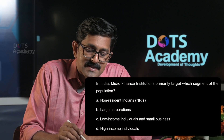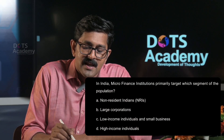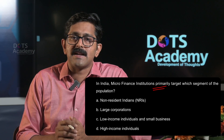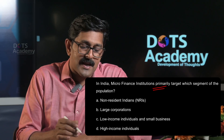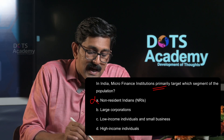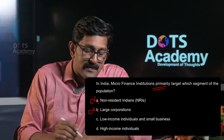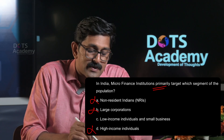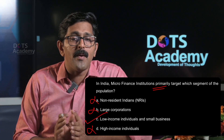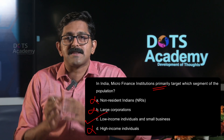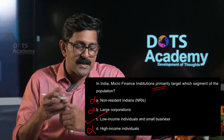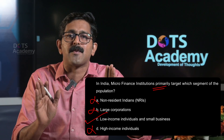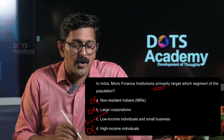In India, micro-finance institutions primarily target which segment of the population? The options are: non-resident Indians, large corporations, low-income individuals and small businesses, and high-income individuals. Micro-finance provides low-amount, collateral-free loans, so the answer is low-income individuals and small businesses.